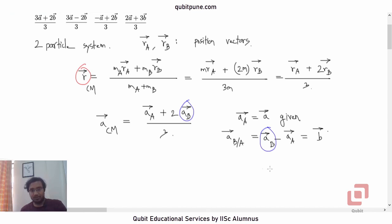We want acceleration of b bar, the expression for this. It will be b bar plus acceleration of a bar. But what is acceleration of a bar? That is a bar.